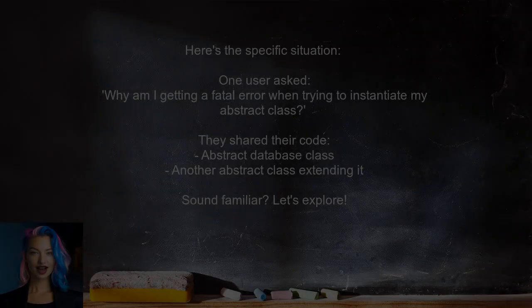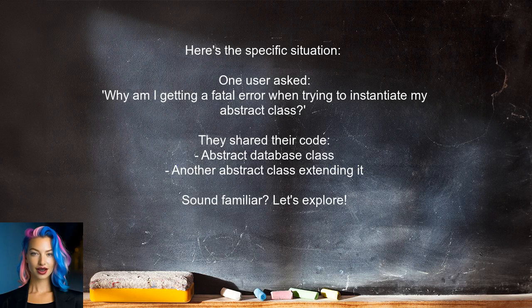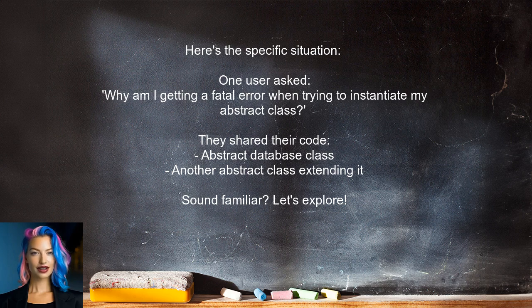Let's take a closer look at the specific situation. One user recently asked: why am I getting a fatal error when trying to instantiate my abstract class? They shared their code, which includes an abstract database class and another abstract class extending it. Let's explore this together.